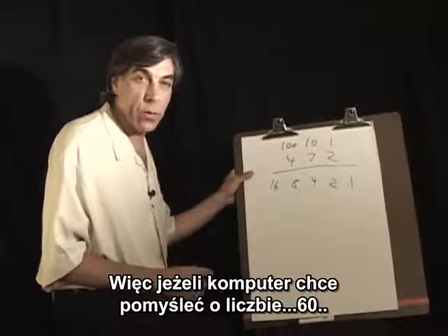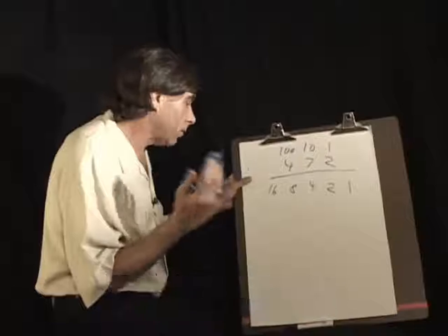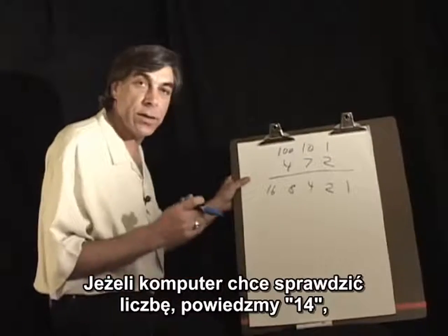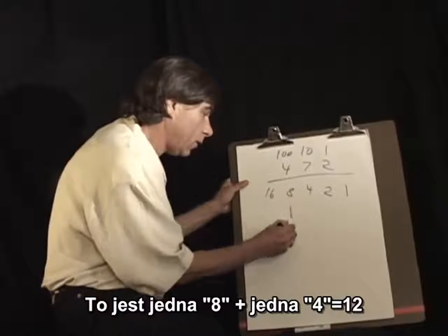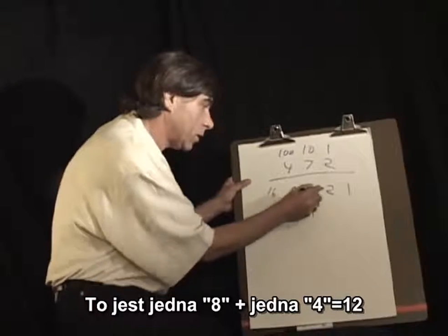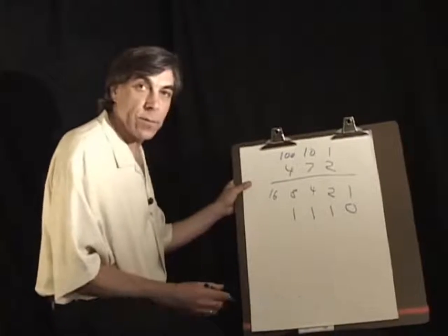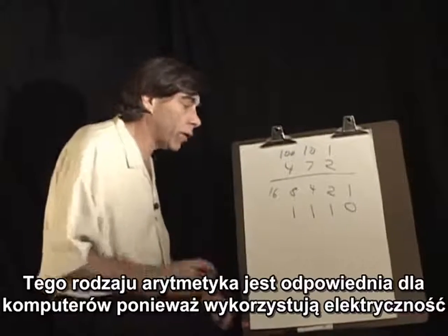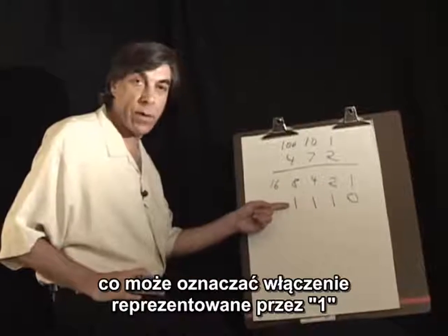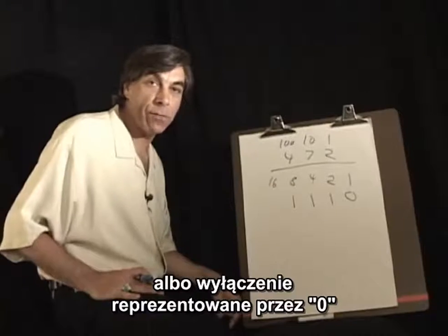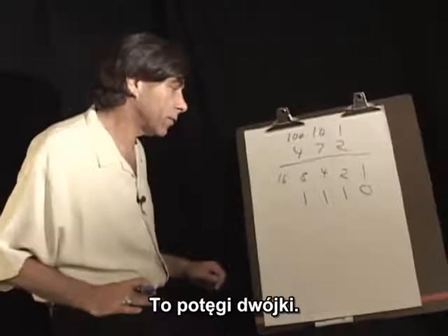So if a computer wants to look at the number 14, it's one eight, one four — that's twelve — one two, and no ones. This kind of arithmetic is appropriate for computers because they deal with electricity, which can either be on, represented by one, or off, represented by zero. The flow of electricity or no flow of electricity — these powers of two.